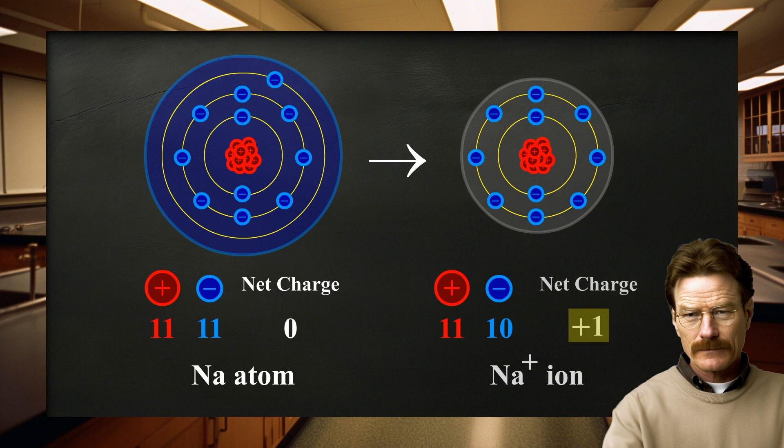The net charge on an ion is represented by a superscript. The superscripts plus, 2 plus, and 3 plus mean a net charge resulting from the loss of 1, 2, and 3 electrons, respectively.